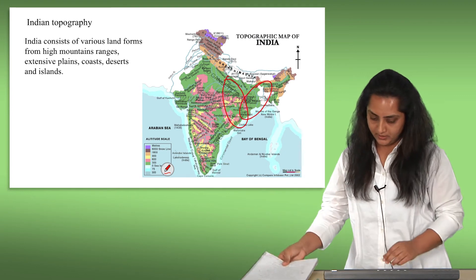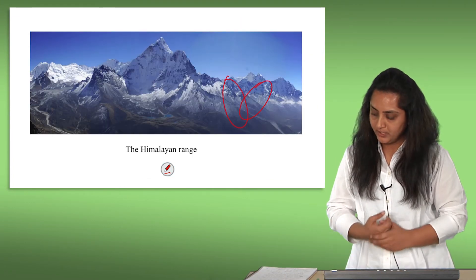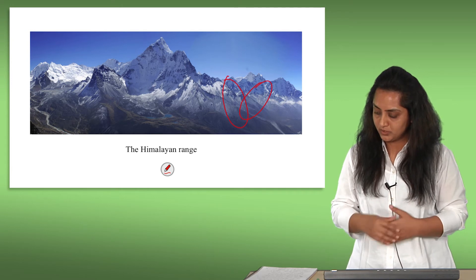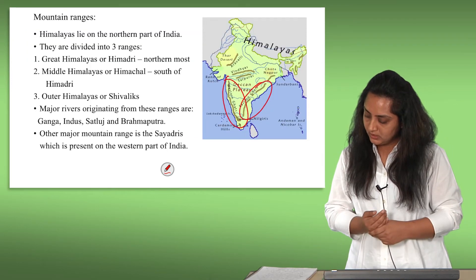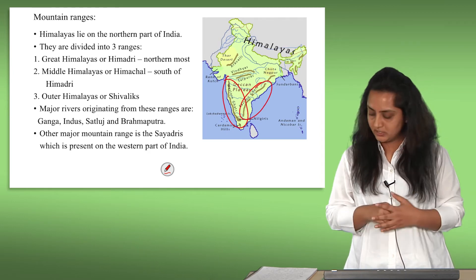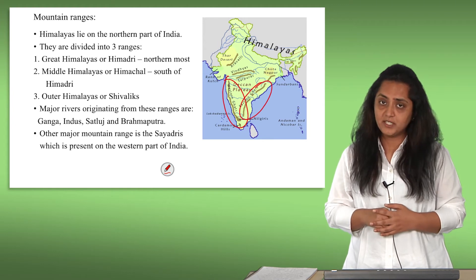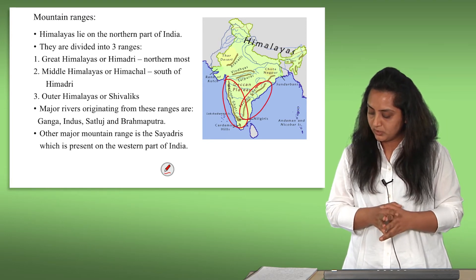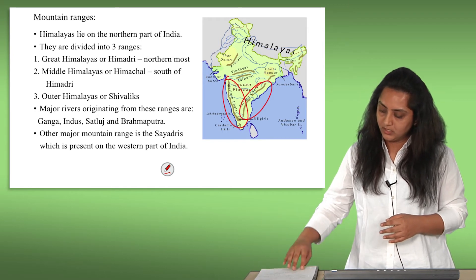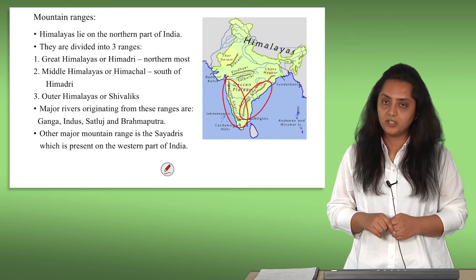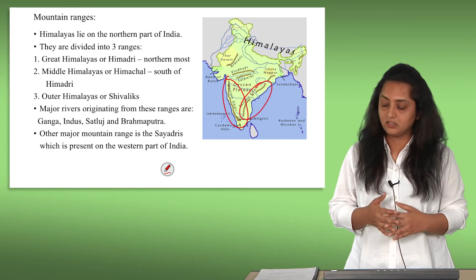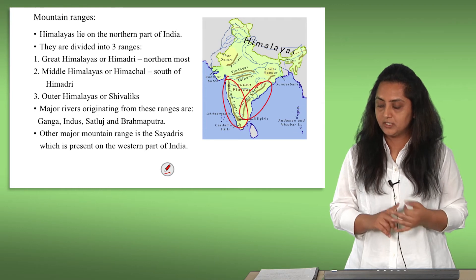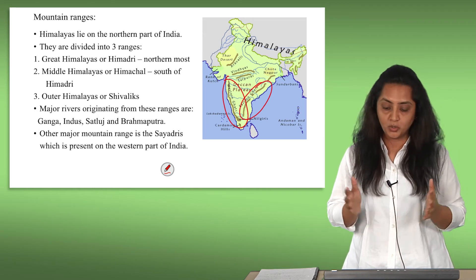Let's talk a little bit about the Himalayas. The Himalayas are geologically young mountains consisting of three main ranges running parallel to each other. The northernmost is known as the Great Himalayas or the Himadri, and it includes Mount Everest, the highest peak in the world, and the second highest peak, Kanchanjunga. The middle range is called the Middle Himalayas or the Himachal, lying south of the Himadri. The southernmost range is the Outer Himalayas or the Shivalik. The major rivers originating from these ranges are the Indus, the Ganga, the Satluj, and the Brahmaputra. The Ganga is the longest river and is also considered the most holy river in India.